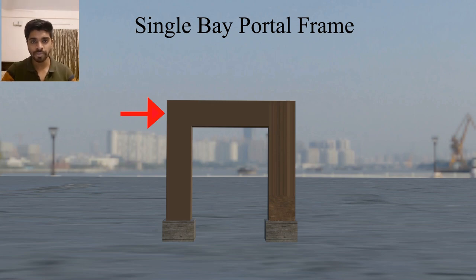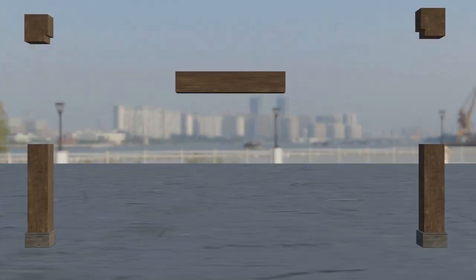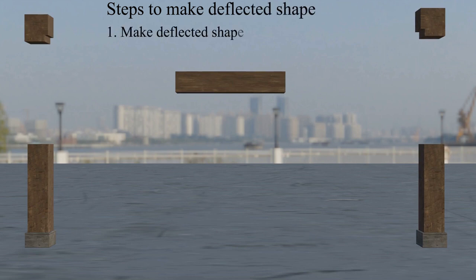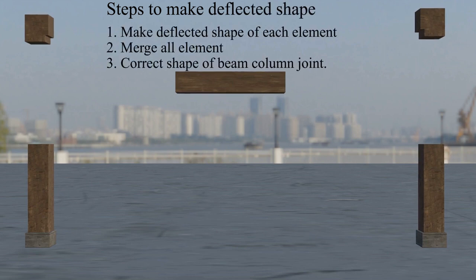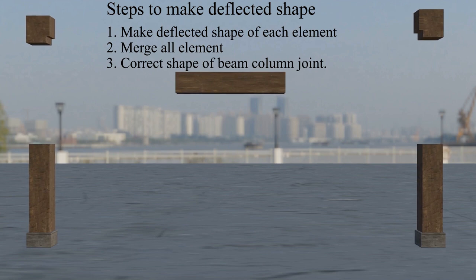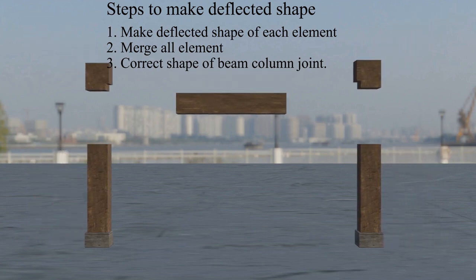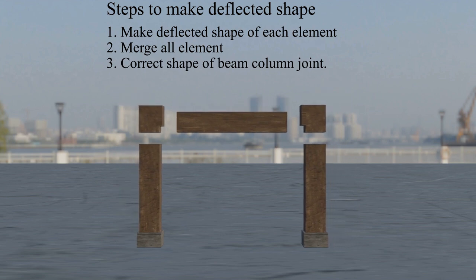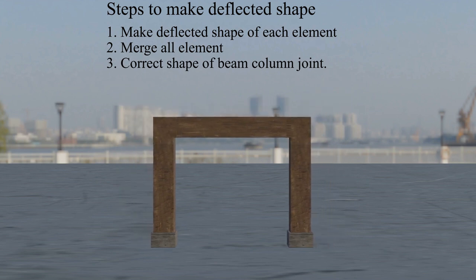Here we will follow three simple steps. First step, we will make each element separately the deflected shape. Second step, we will merge the three elements of the deflected shape. And the third step, we will correct the beam column joint of the deflected shape.